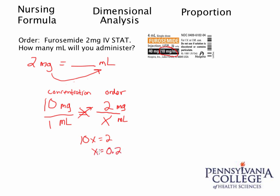Remember x equals 0.2 — don't leave your answer without the unit. It should be 0.2 milliliters. In summary, with proportion, the ratio of the concentration is equivalent to the ratio of the order: 10 milligrams per milliliter equals 2 milligrams per x milliliters. This is different from dimensional analysis because you need to cross multiply to solve.